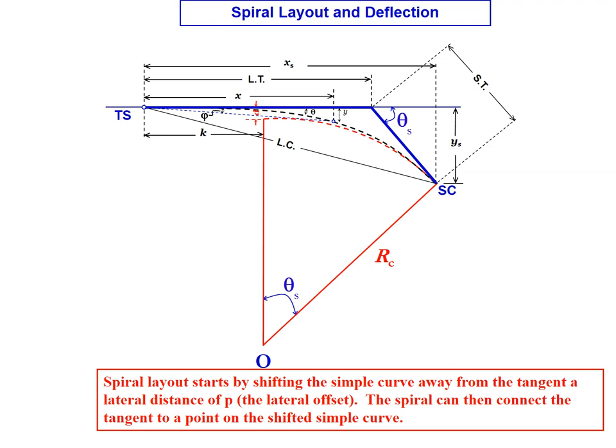The spiral layout starts by shifting the simple curve away from the tangent, your lateral distance P. So we saw that in that earlier image where the simple curve and spiral curve are overlaid with each other. So again, we need to shift that simple curve away from the tangent. And then the spiral can then connect to the tangent to the point that we've shifted that simple curve away from the tangent.